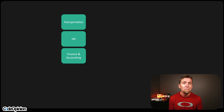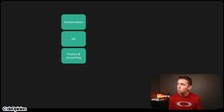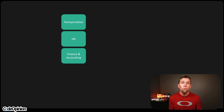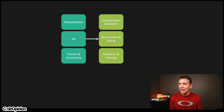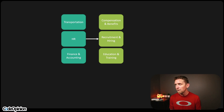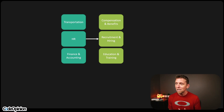To start exploring business capabilities, you just want to keep digging. If we're thinking about transportation in that domain, in organizations there are other things like HR, finance, and accounting. If we were to dig into HR and take it a level deeper, we have things like compensation and benefits, recruitment and hiring, and education and training.